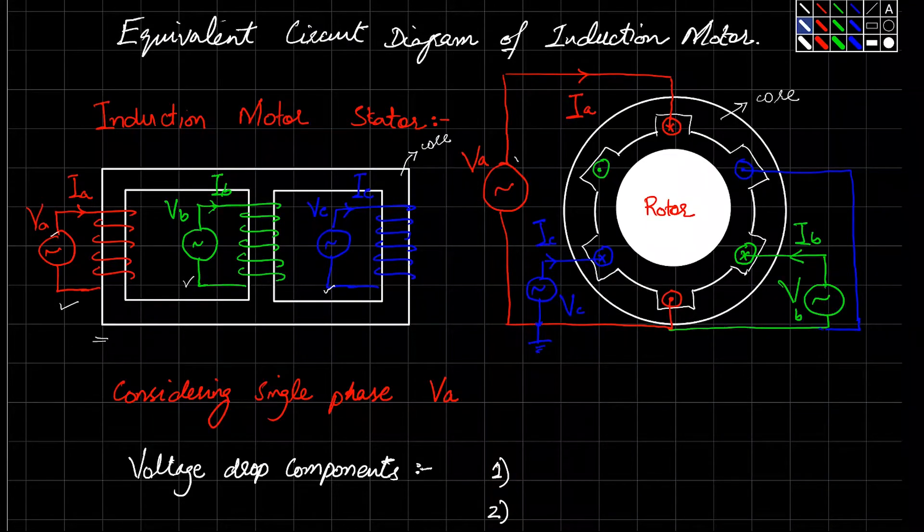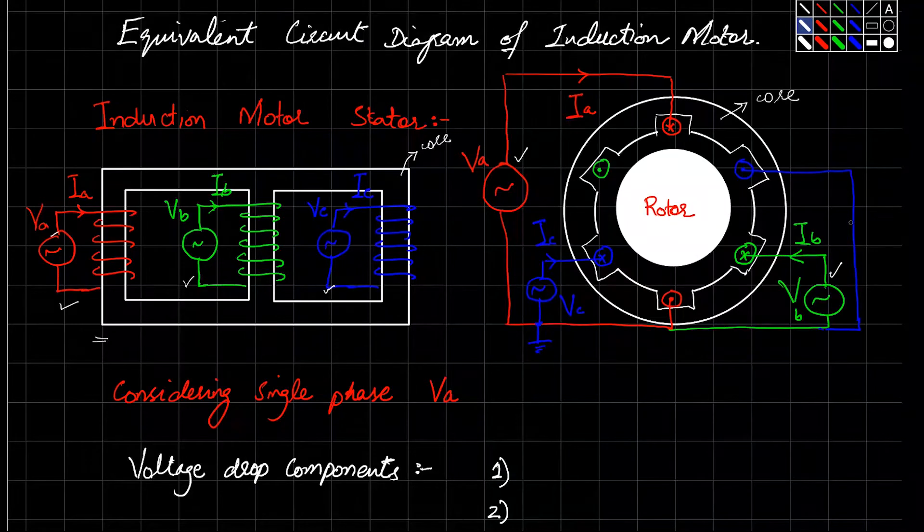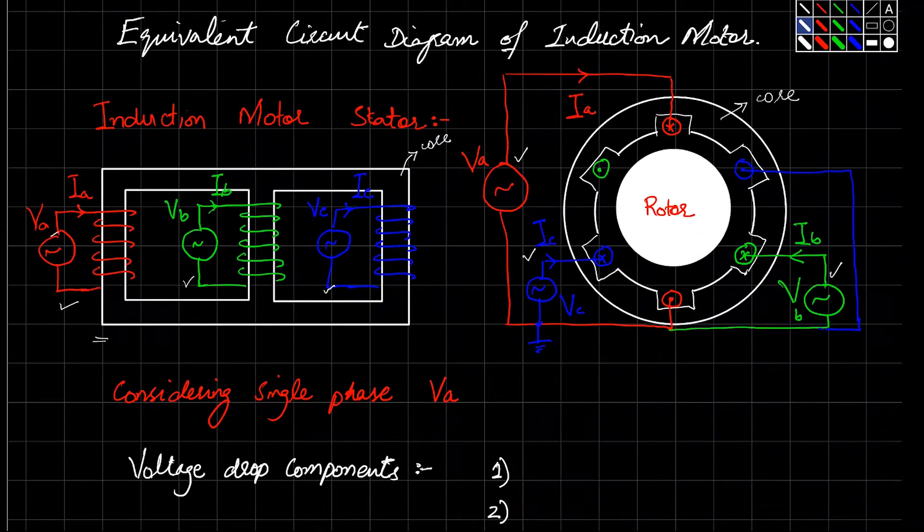In the induction motor we have VA, VB, and VC. These are the three input sources making a three-phase equipment.